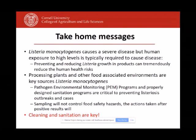The take-home messages I want you to have at the completion of this seminar: number one, related to the biology of Listeria, it's important to realize that Listeria monocytogenes, even though it causes severe disease, requires high levels to make a person sick. This is practically important because it leads us to an intervention strategy. If products don't allow growth, or are reformulated for reduced Listeria growth, or stored in a way to reduce growth, the risk of a human disease case or outbreak can be much reduced.